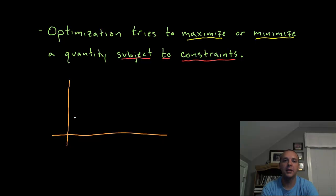The calculus topic of optimization tries to maximize or minimize a quantity subject to certain constraints. When we first see the words maximize and minimize, our mind immediately goes to extrema, and that is very closely tied to what we are going to use to solve these optimization problems.